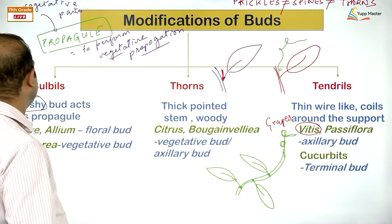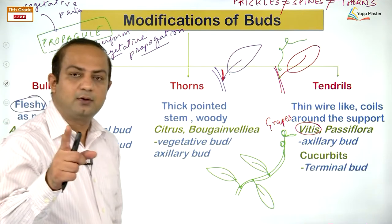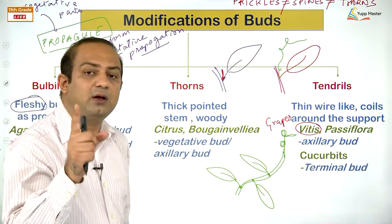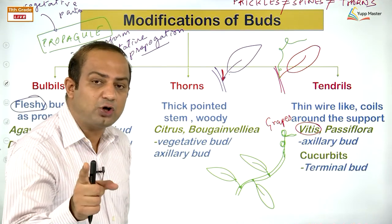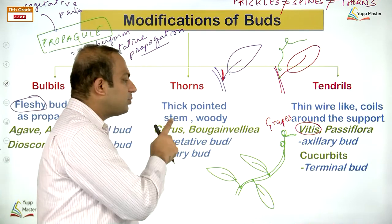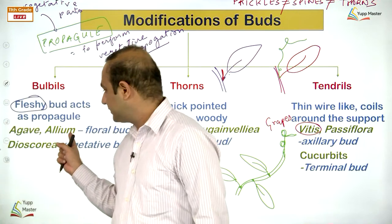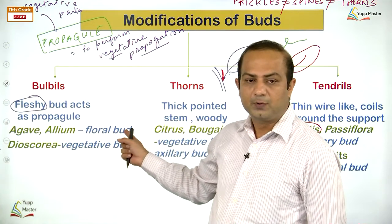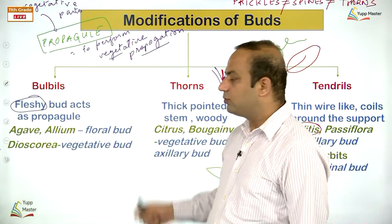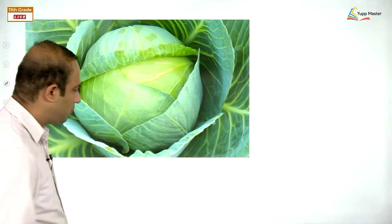Not all stems are woody. The bark formation can be observed on woody tree surfaces. Functions of the stem include: spreading branches bearing leaves, flowers, and fruits; conducting water, minerals, and photosynthates (products of photosynthesis, mainly sugar); storage of food; support; protection; and vegetative propagation.